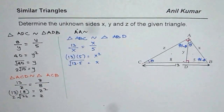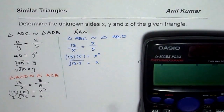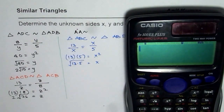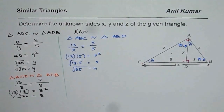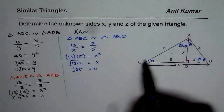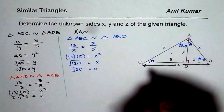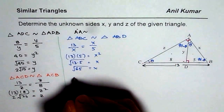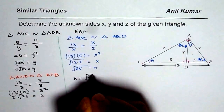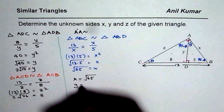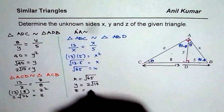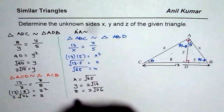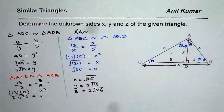That is what we call the geometric mean of the sides — this is the geometric mean theorem. So X equals square root of 65. You can always write in decimal values. Y equals 2 square root of 10, and Z equals 2 square root of 26. These are exact answers in whichever units you choose for the sides of length 8 and 5. That is how we can solve it.